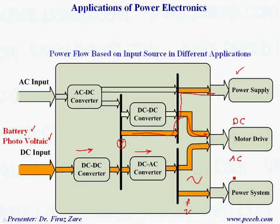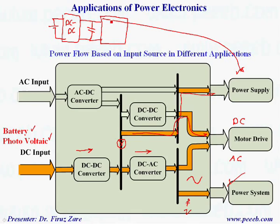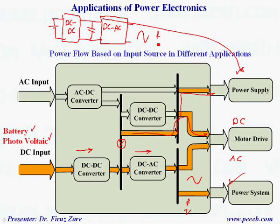Through this converter, if the input is DC, through this DC-DC converter we get DC voltage. Normally we have a capacitor large enough to provide regulated voltage. And then if we need that voltage as a power supply, we can use it in these applications, or if we need it for an AC power system, we can connect the system through another converter, which is called DC-AC, and across the output we get AC voltage at different frequency and different magnitude.